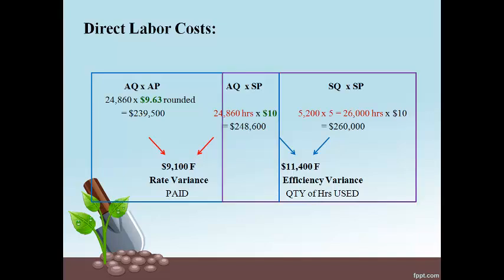On the right side, the $11,400 favorable variance came about because the company actually used 24,860 hours when they expected to use 26,000 hours to make the 5,200 products they actually produced. It is important to remember that the SQ always begins with actual units made.